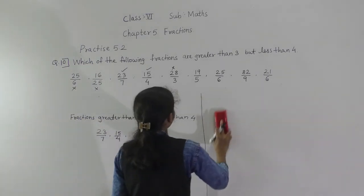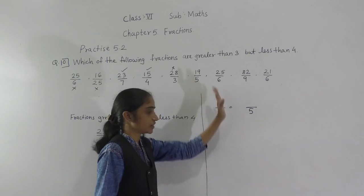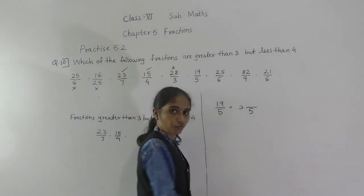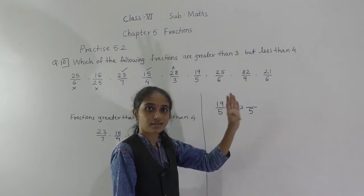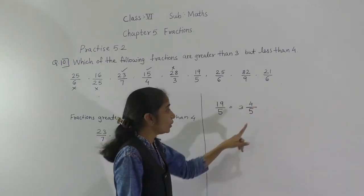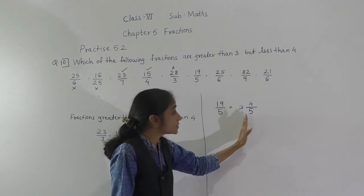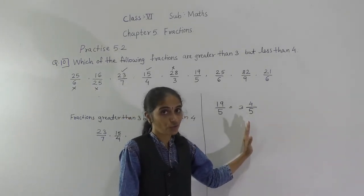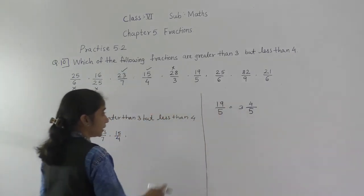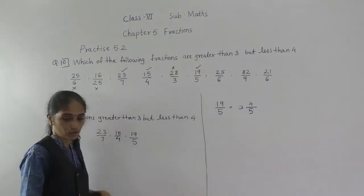Next: 19 upon 5. Convert: 5 threes are 15, remainder 4, giving 3 and 4 upon 5. The whole number part is 3, so this fraction comes between 3 and 4. It is greater than 3 but less than 4, so 19 upon 5 is also one of our answers.